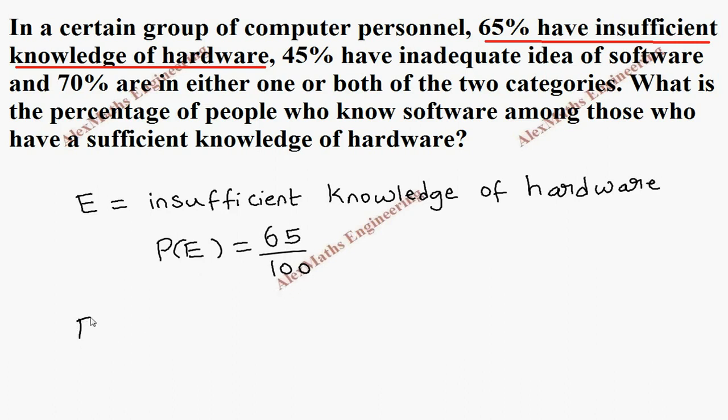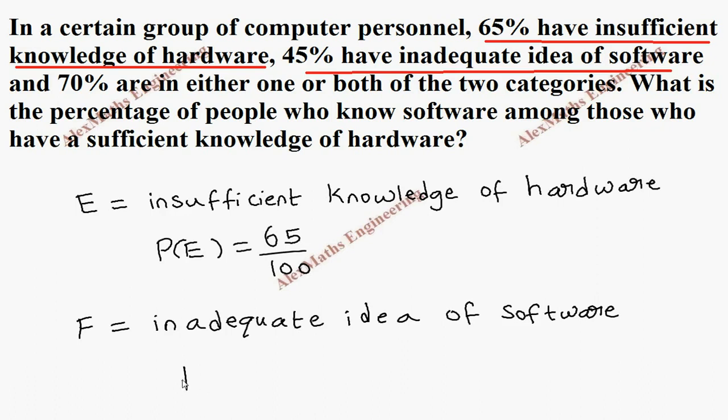Now, let's take F as the another one. 45% have inadequate idea of software. This is inadequate idea of software. So we can write P(F) as 45 by 100.